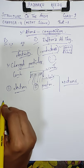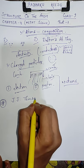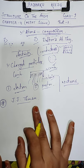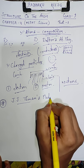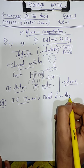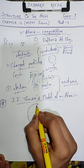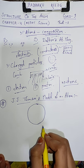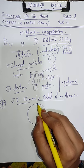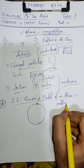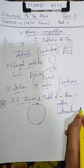Ab hum sabse pahle dekhenge structure of an atom — atom ka structure kis type ka hota hai. Uske liye sabse pahle hamare paas scientist hain J.J. Thomson. J.J. Thomson naam ke scientist ne apna ek model diya atom ko lekar — J.J. Thomson's model of an atom. This is the way Thomson has told us that any atom exists — like a Christmas pudding, or we can say a watermelon model.